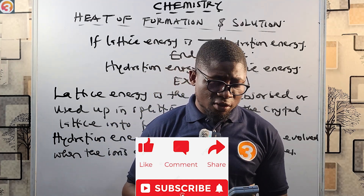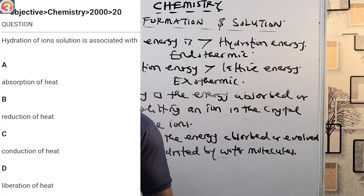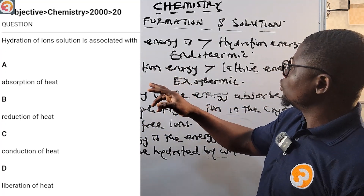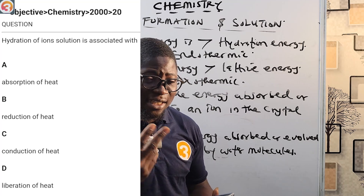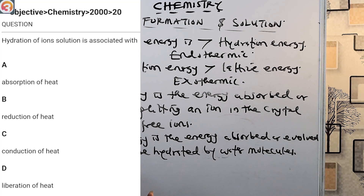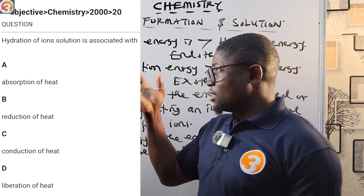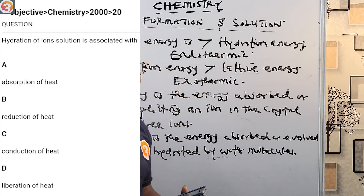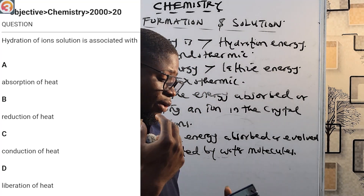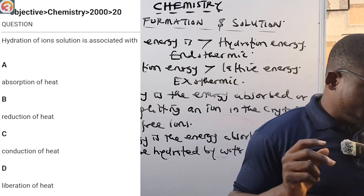Here is a 2000 chemistry question displayed on screen. It asks: 'Hydration of ions in solution is associated with what?' The answer is that when hydration energy is greater than lattice energy, the reaction is exothermic, so energy is liberated. Option A says absorption of heat — that's for lattice energy. Option D, liberation of heat, is the correct answer.